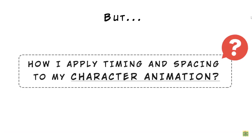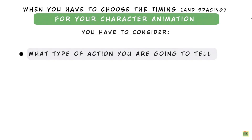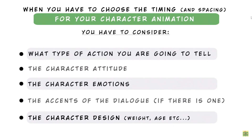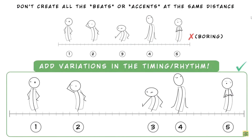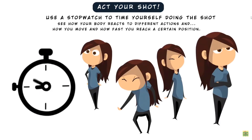But how do you apply timing and spacing to character animation? The timing is the speed but also the rhythm of your movement. In character animation, you have to consider the action you're going to tell, the character's attitude and emotions, the accent of the dialogue, and other aspects. The choices of timing are finalized to make the performance perfectly readable and interesting. That's why it's important not to create all the beats and accents at the same distance — add variation in timing and rhythm. A good tip is to use a stopwatch to time yourself during the shot to get a realistic reference and see how your body reacts to different actions.